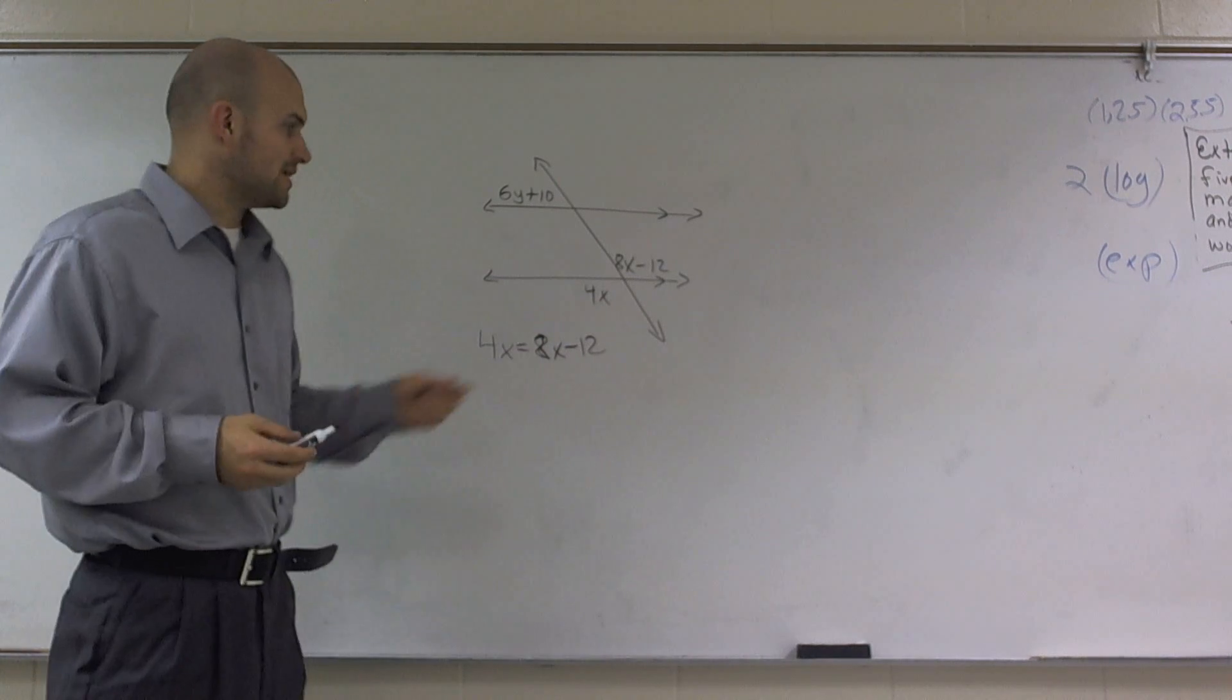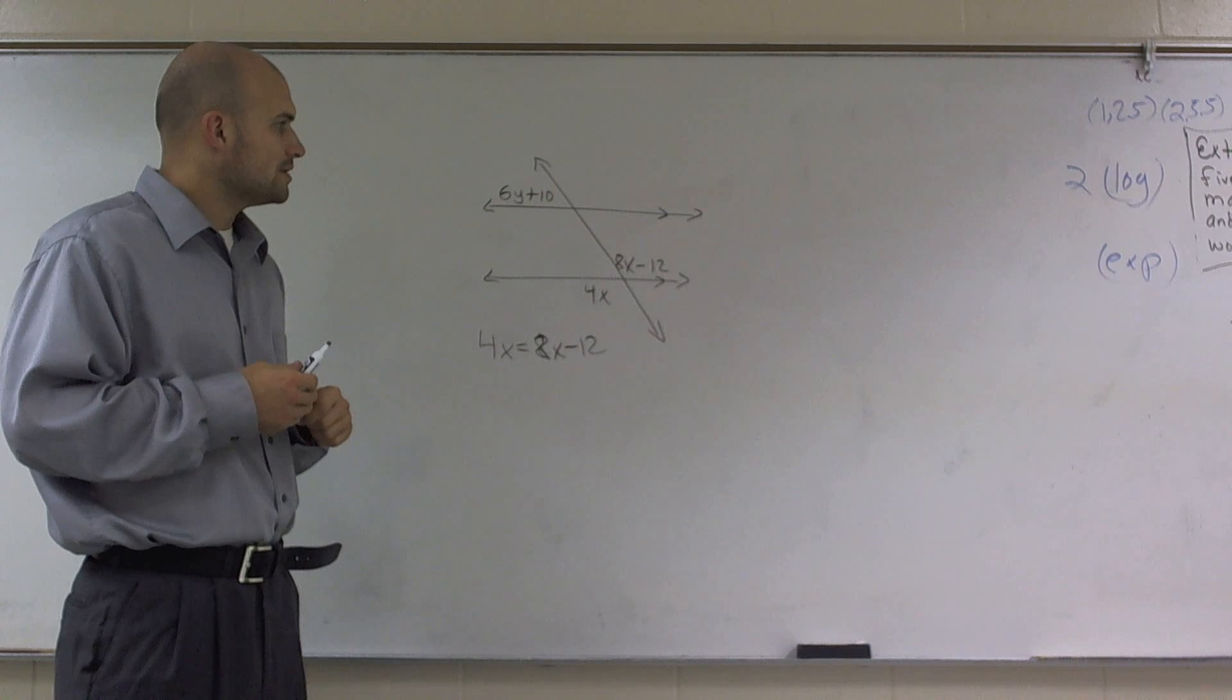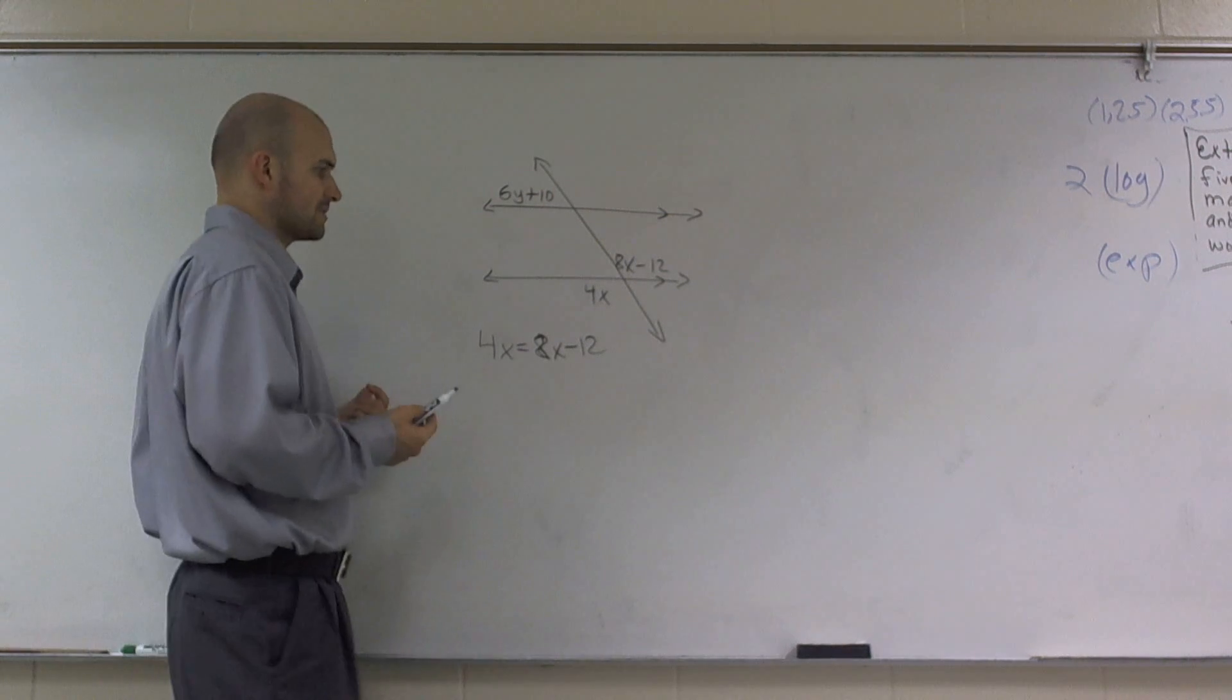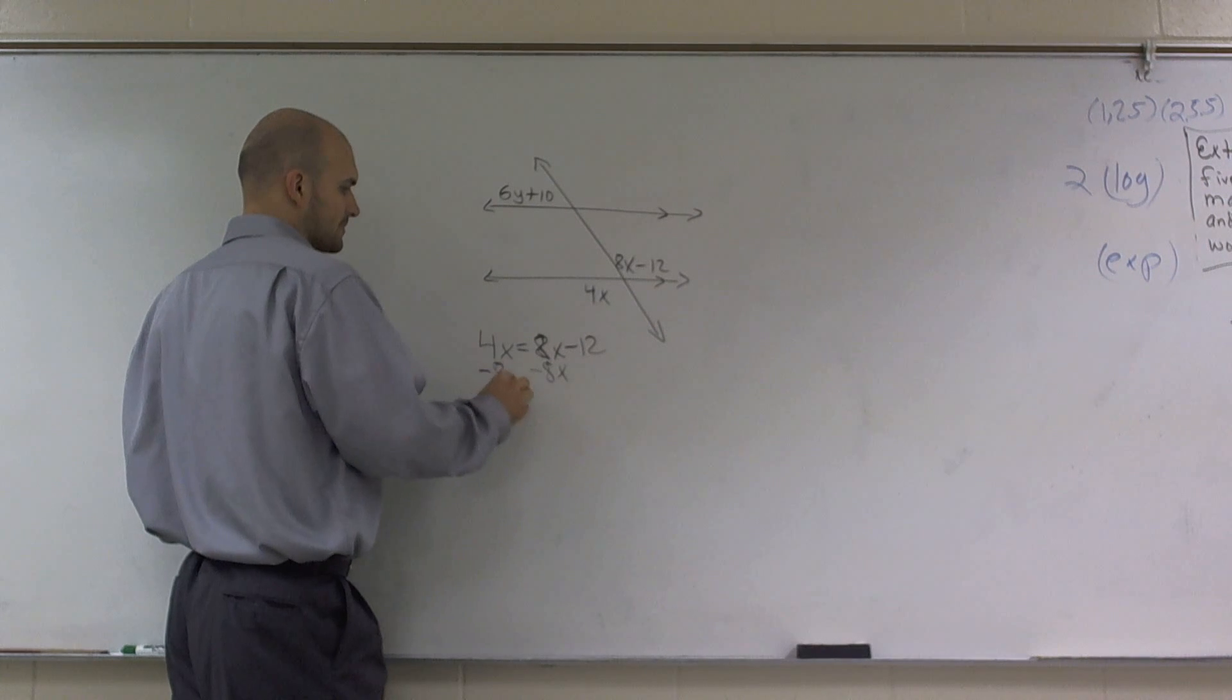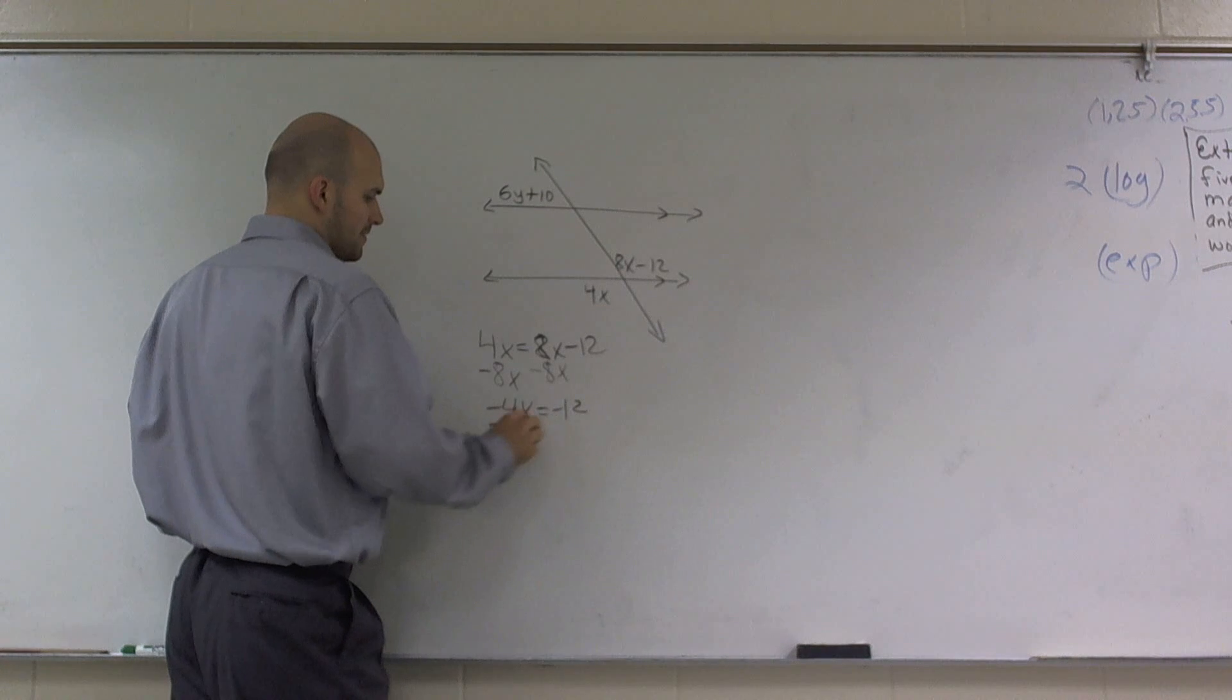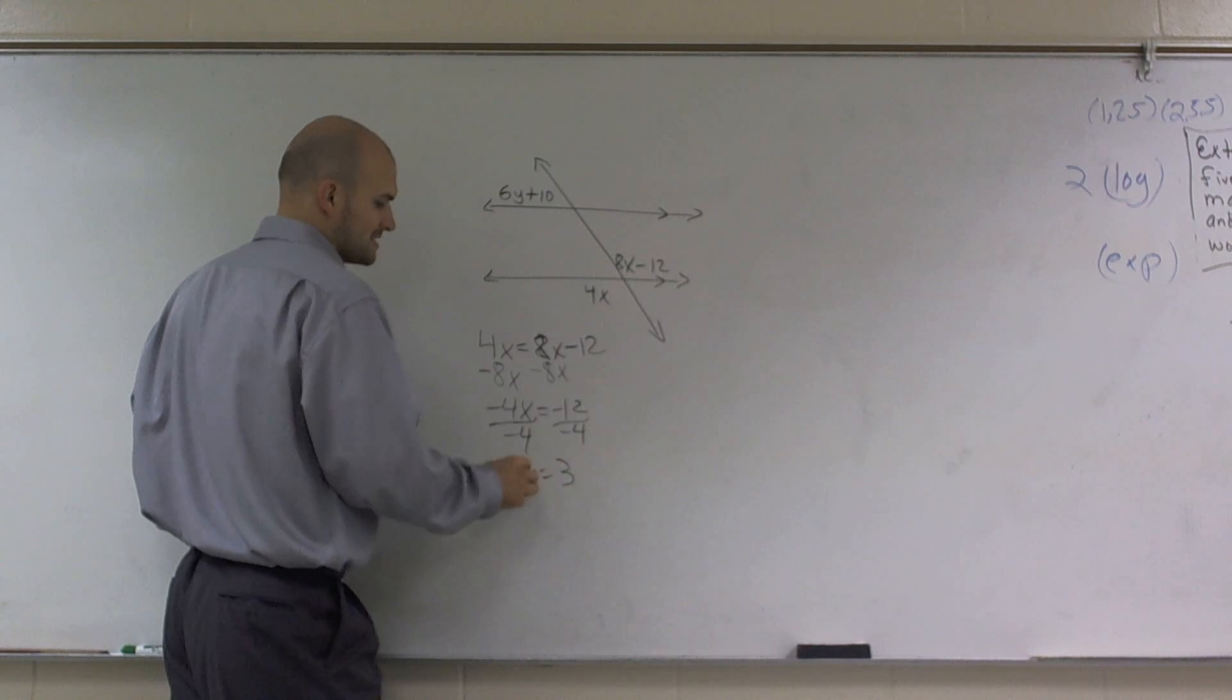So what I can do is, I can set up an equation to solve for these two. So I can say 4x is equal to 8x minus 12. Now, what I can do is, I can solve 4x. Then I divide by negative 4, and I get x equals a positive 3.